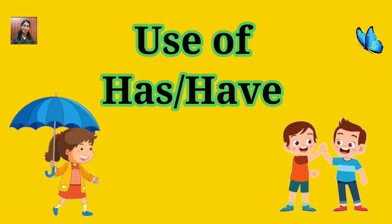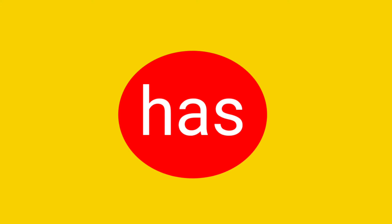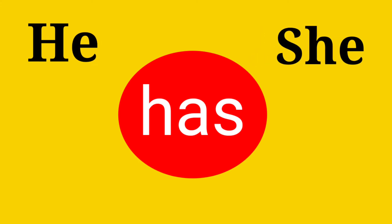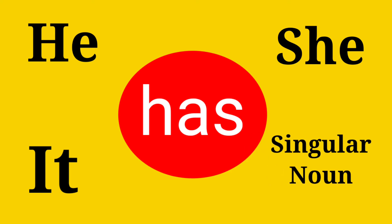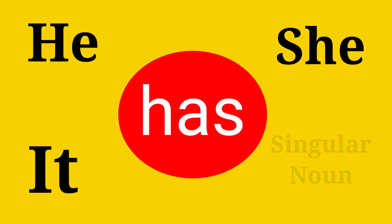Use of has and have. We use 'has' after he, she, it, and a singular noun. A singular noun can be one person, one place, or one thing.